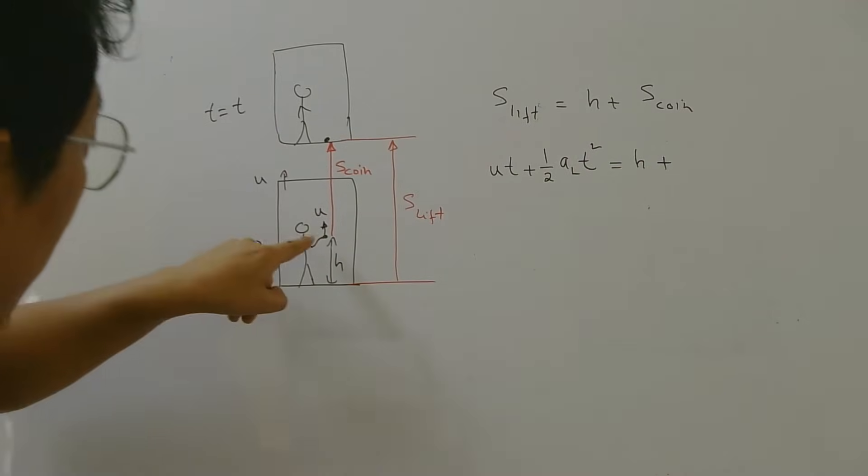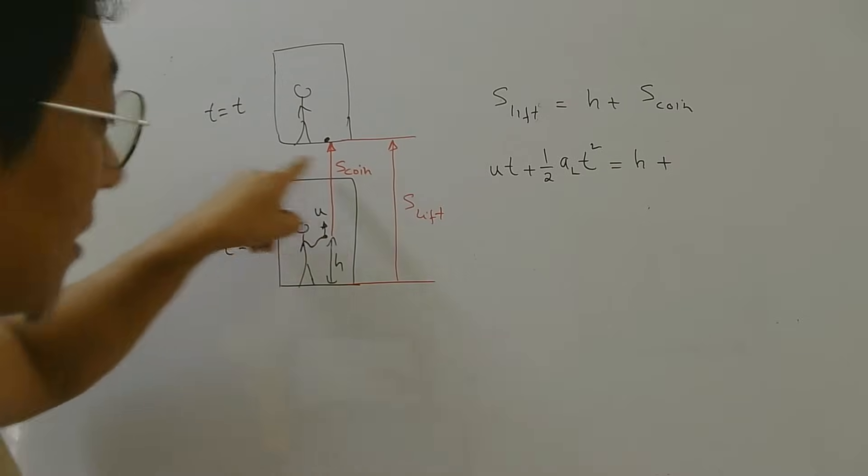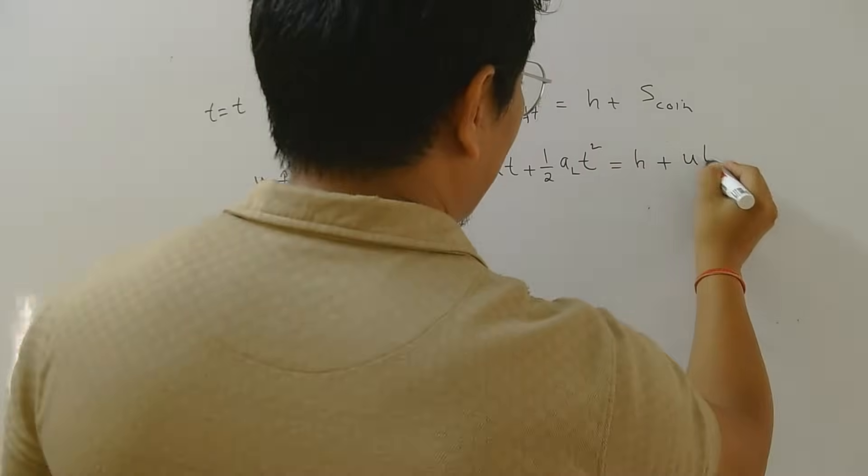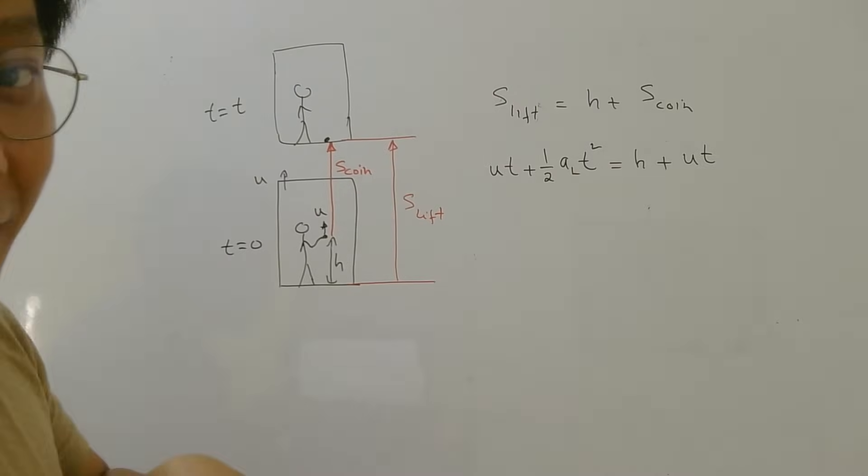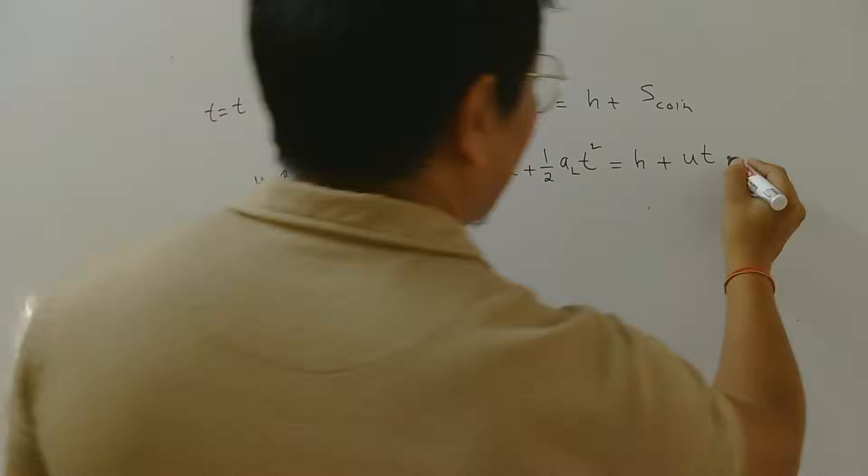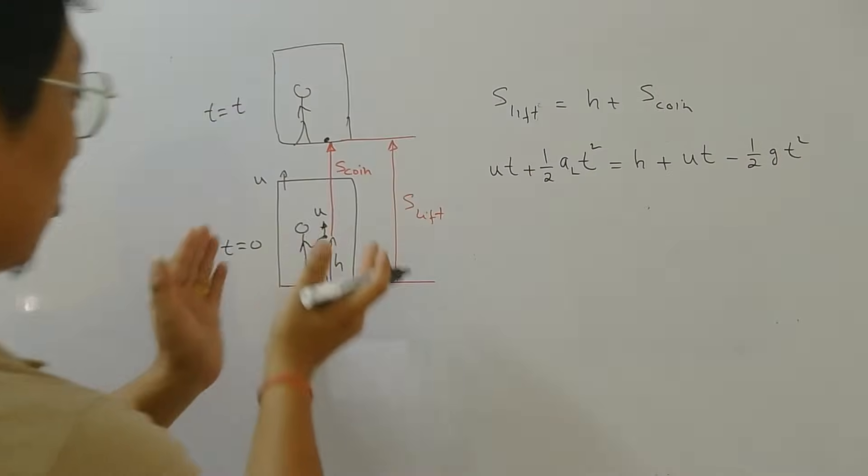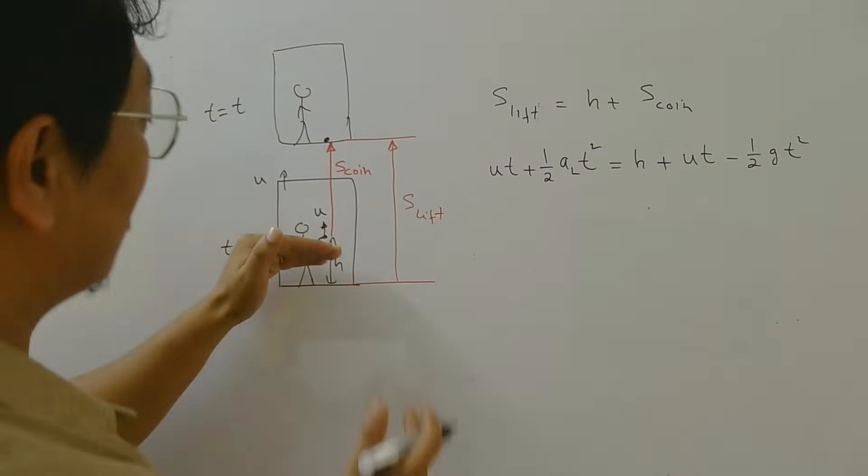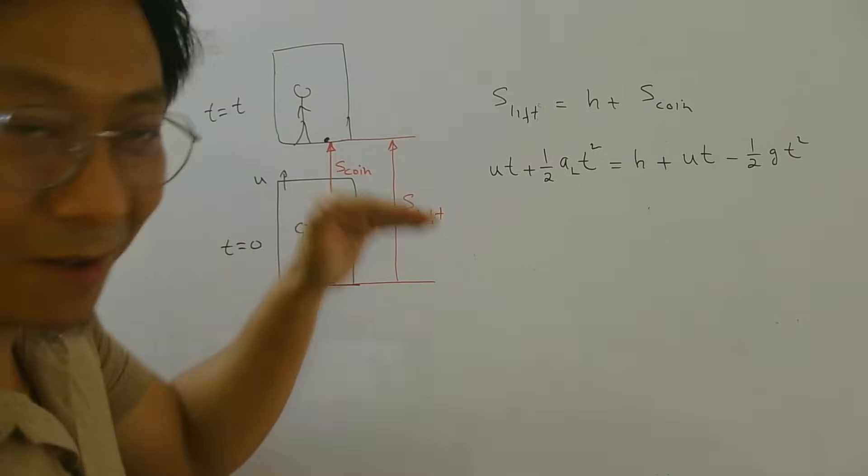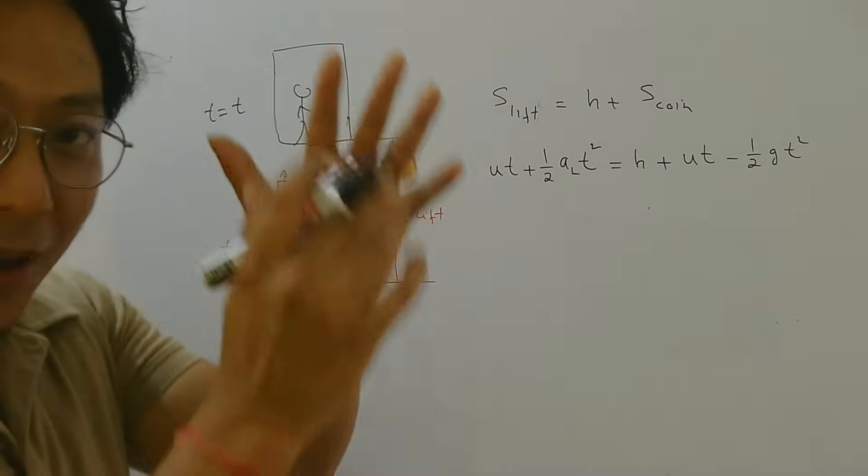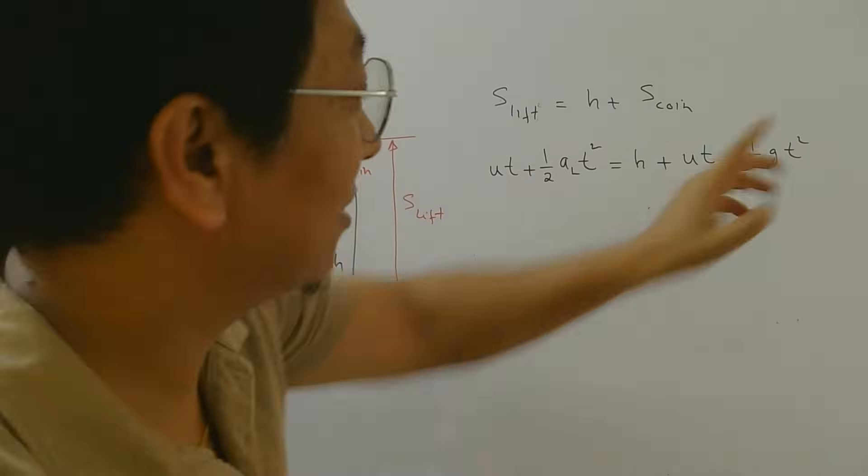Displacement of coin. Coin also has same initial velocity as the lift because till that point they were together, right? So u into t but now coin has acceleration g down. So minus half g t square. Why minus? Because from ground frame you see the system going up. You see the coin going up, right? Because the lift was going up. Understand that very important. So while going up I take down negative. So minus g.